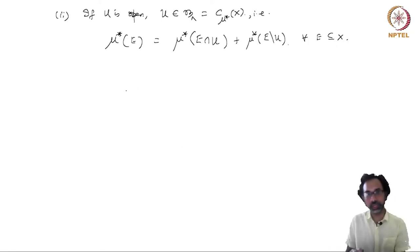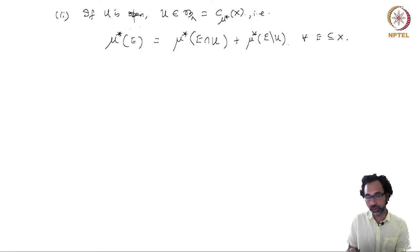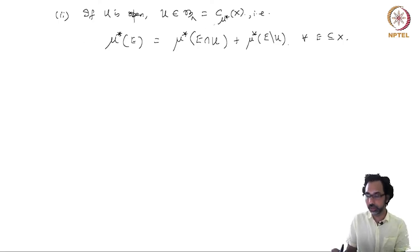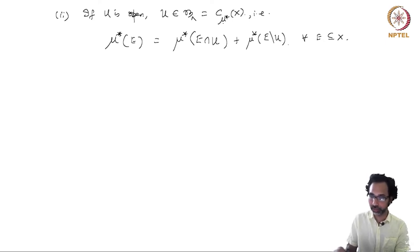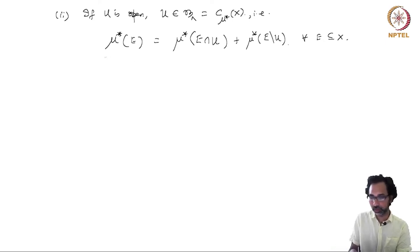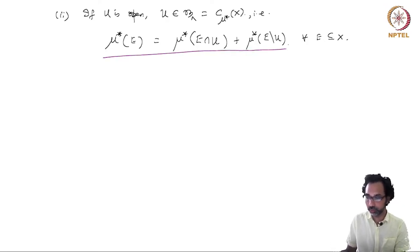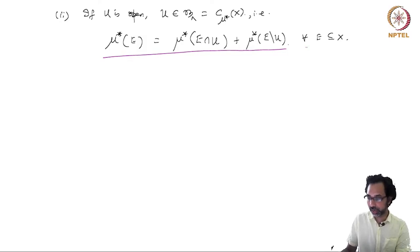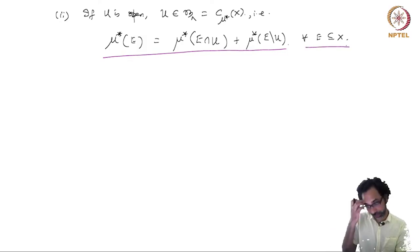For the second claim, we have to show that if U is open, then U belongs to the sigma algebra of Carathéodory measurable subsets, which equivalently means μ*(E) = μ*(E ∩ U) + μ*(E \ U) for any subset E in X.